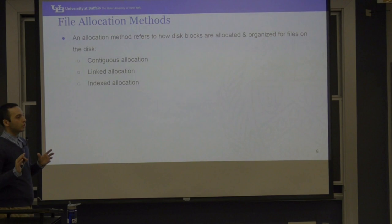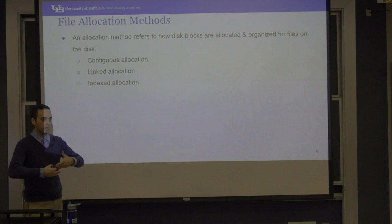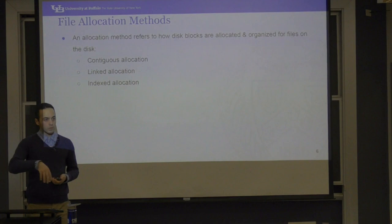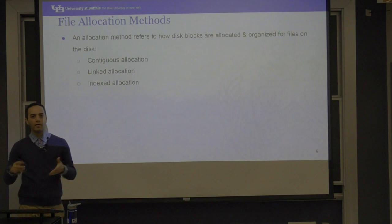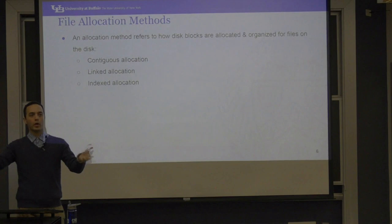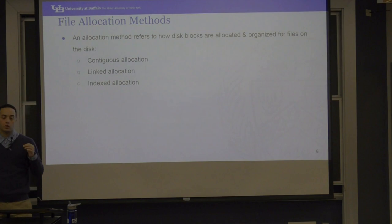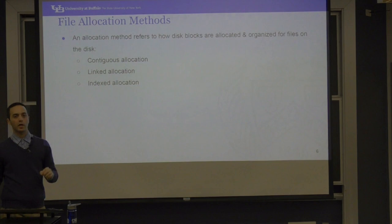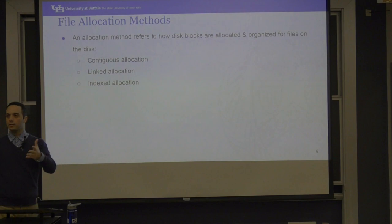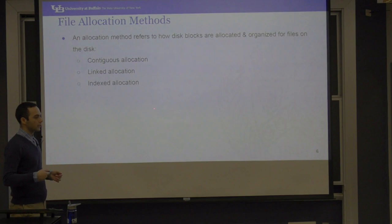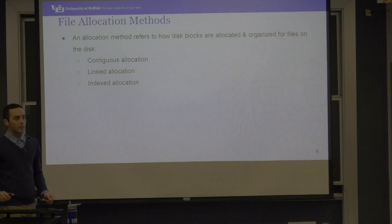Because the operating system needs to do that, it needs an allocation method on the disk. Think of the disk as a long track of blocks. You have a file, you need to find space for it and store it, and you should be able to address it whenever the user wants to access one piece of it. There are methods to allocate space: contiguous allocation, linked, and indexed — though there are others, these are the examples we'll talk about.